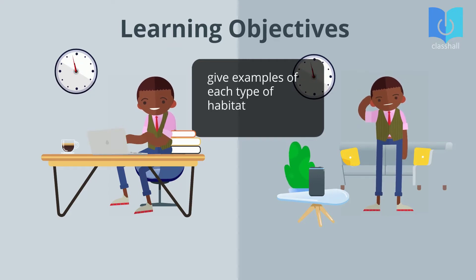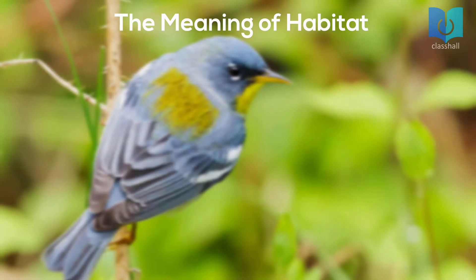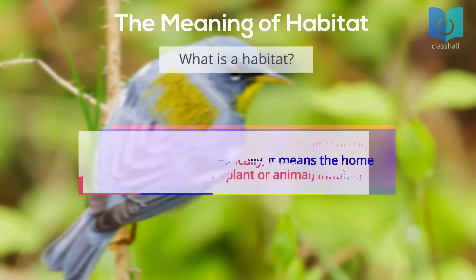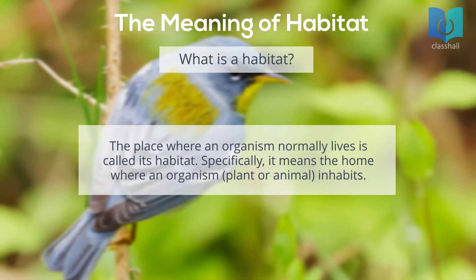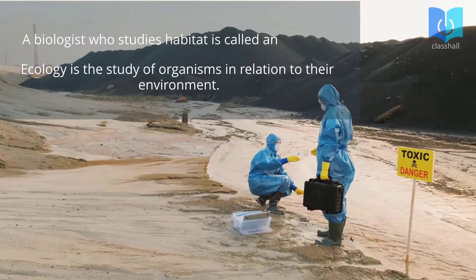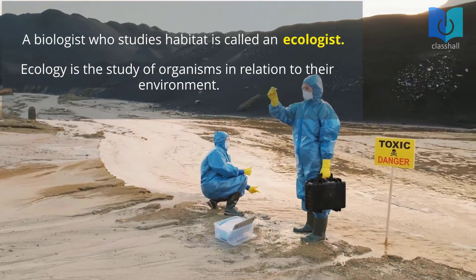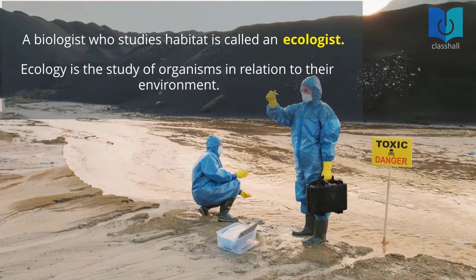You'll also be able to give examples of each type of habitat. What is a habitat? The place where an organism normally lives is called its habitat. Specifically, it means the home where an organism — plant or animal — inhabits. A biologist who studies habitat is called an ecologist. Ecology is the study of organisms in relation to their environment.